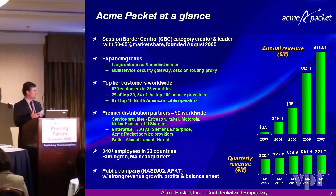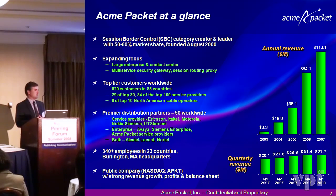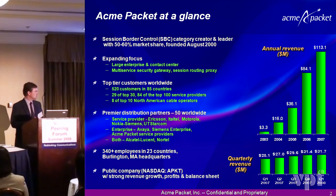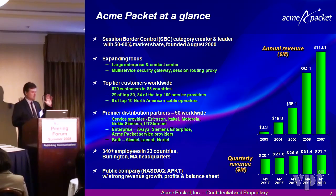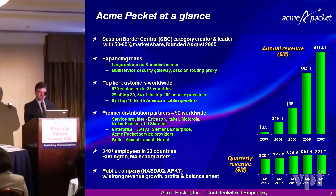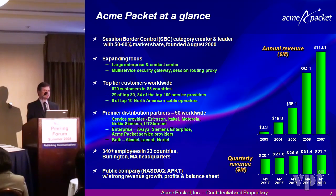You can see we've got premier distribution partners — 50 worldwide — sitting in a really ubiquitous, homogeneous network of various telecommunications manufacturers. Certainly you should see a strong session border controller company these days, as the market has been very good for voice over IP peering.